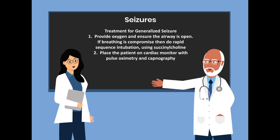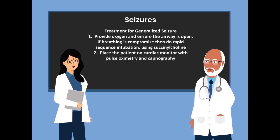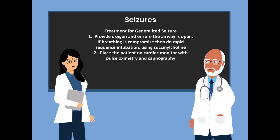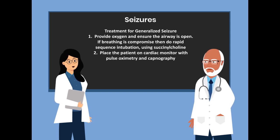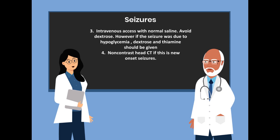Now let's look at the treatment for generalized seizures. Number 1: provide oxygen and ensure the airway is open. If breathing is compromised, do rapid sequence intubation using succinylcholine because it is very short-acting. The only drawback with succinylcholine is renal failure. Number 2: place the patient on cardiac monitor with pulse oximetry and capnography. Number 3: intravenous access with normal saline is important. Number 4: avoid dextrose; however, if the seizure was due to hypoglycemia, dextrose and thiamine should be given.